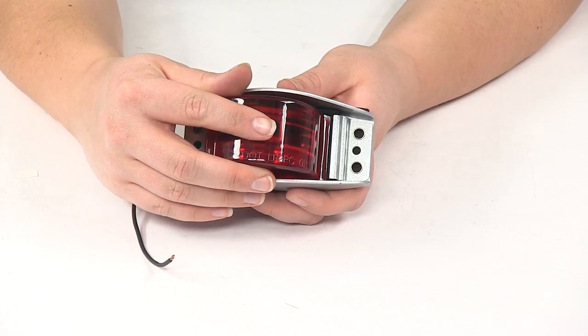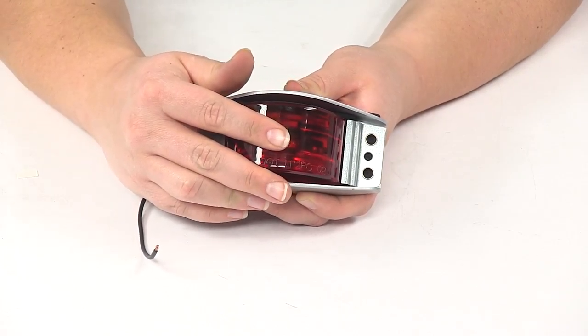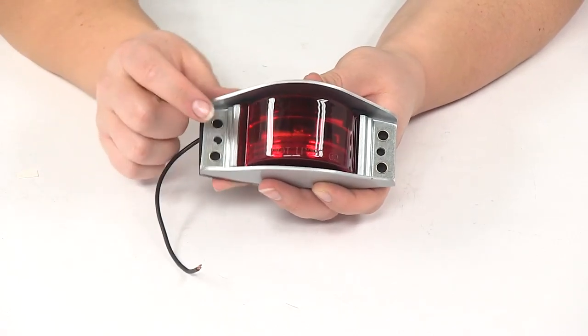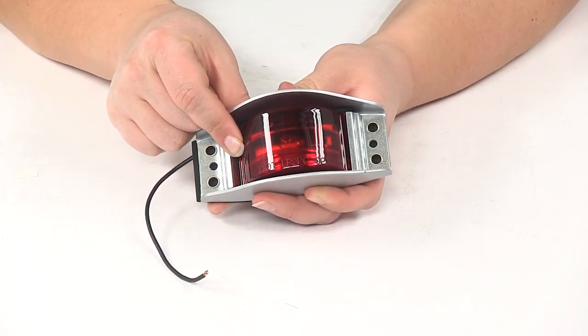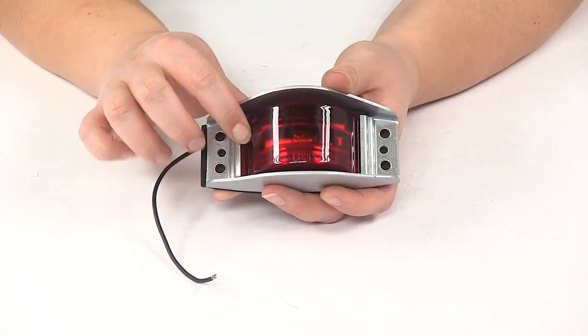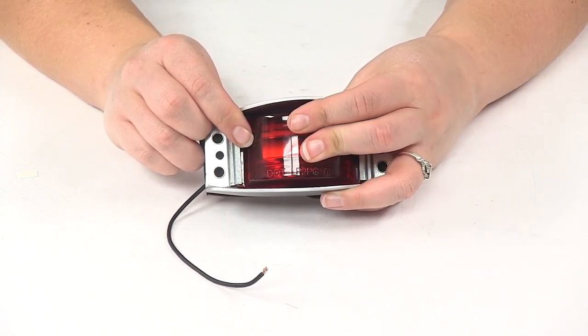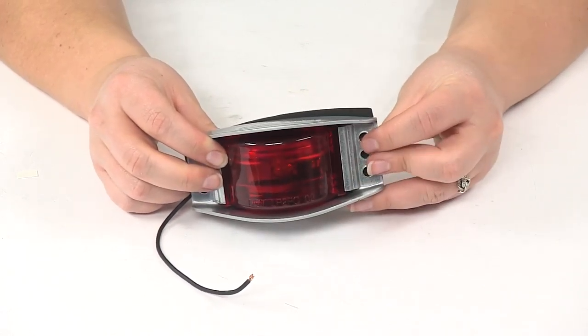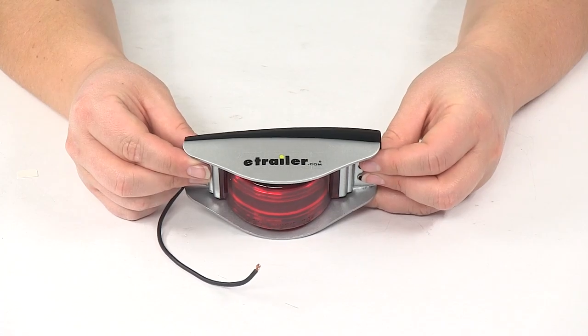So we'll just press it down, slide it into place on that flange, and then there's enough room to push it down into that housing and then slide it back over so that it's centered and everything is secure inside our light housing.